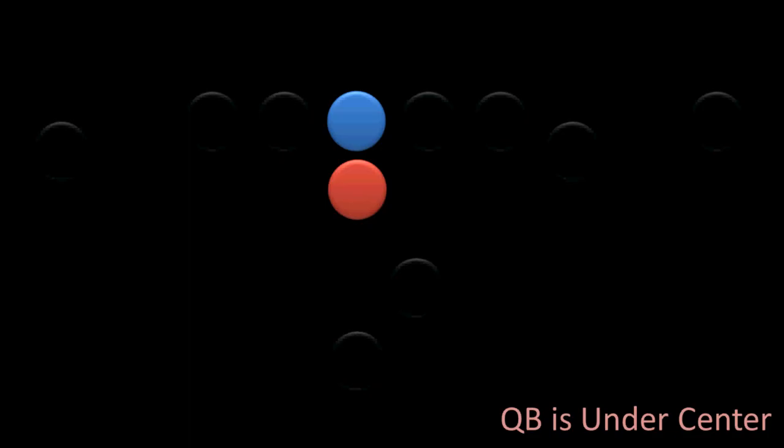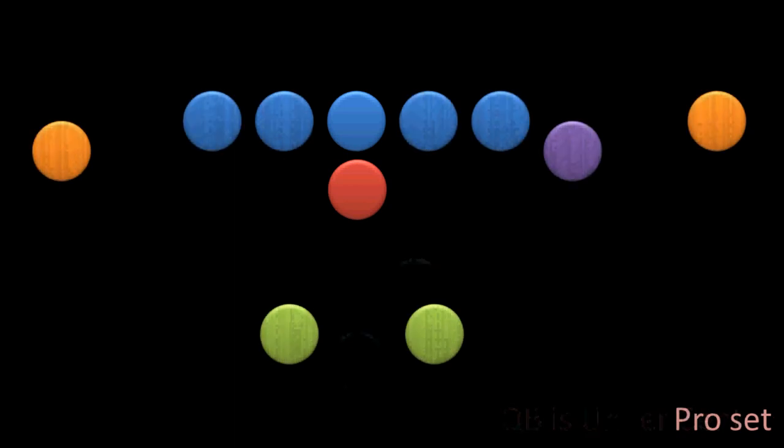We'll come back to the alternative for being under center in a minute. But right now, let's look at another formation that's pretty similar to the I formation, and this is called the pro set formation, which is similar to the I formation, except that the running backs are positioned to either side of the quarterback in the backfield.